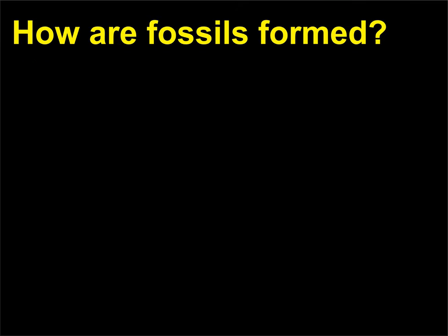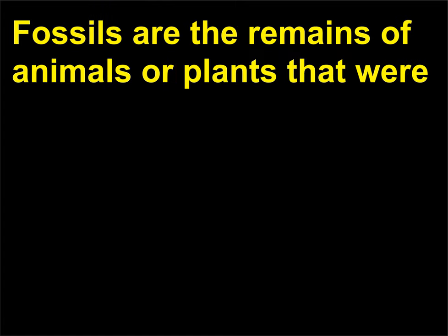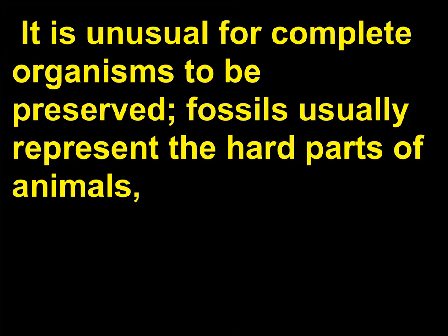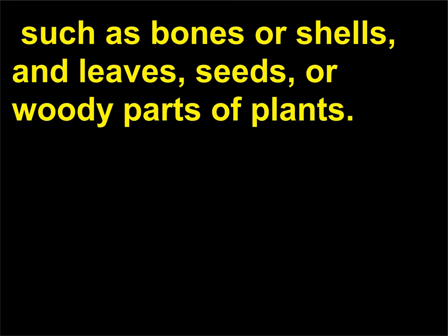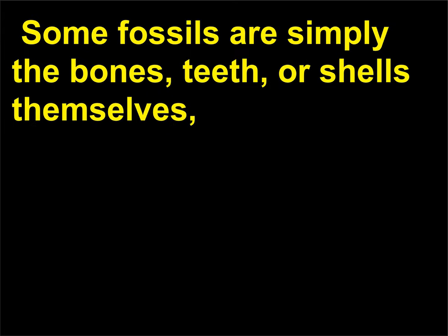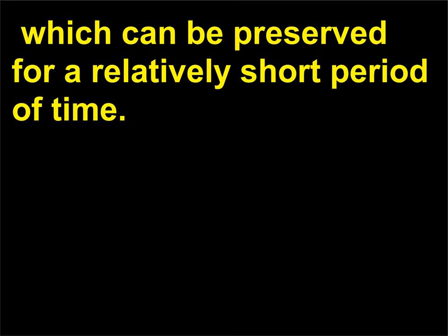How are fossils formed? Preserved in rock before the beginning of recorded history, it is unusual for complete organisms to be preserved. Fossils usually represent the hard parts of animals, such as bones or shells, and leaves, seeds, or woody parts of plants. Some fossils are simply the bones, teeth, or shells themselves, which can be preserved for a relatively short period of time.